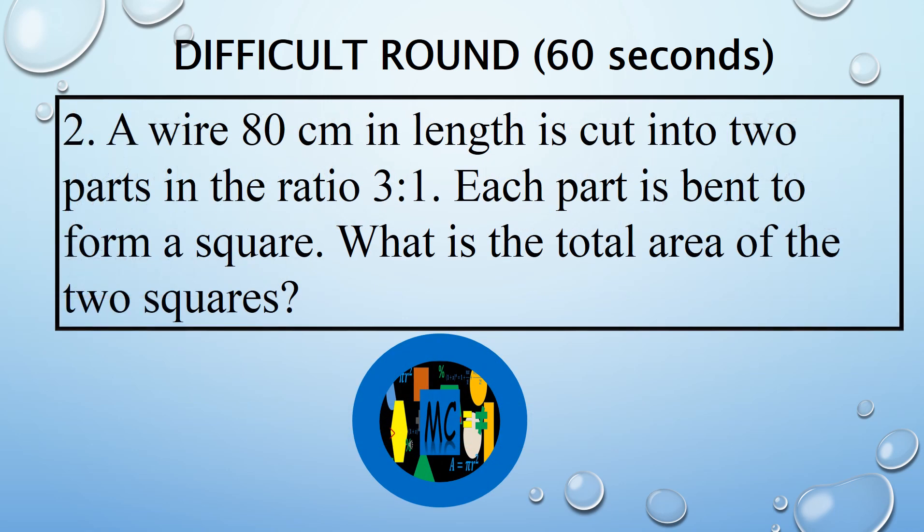A wire 80 centimeters in length is cut into two parts in the ratio 3 is to 1. Each part is then used to form a square. What is the total area of the two squares?